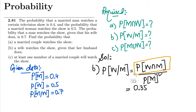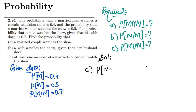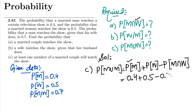For part (c), we need P(M or W) — the probability that at least one member watches the show. Using the formula: P(M or W) = P(M) + P(W) − P(M and W). Substituting: 0.4 + 0.5 − 0.35. The answer is 0.55, which is the solution to part (c).